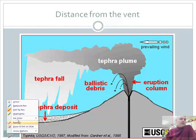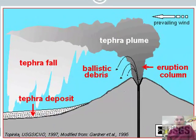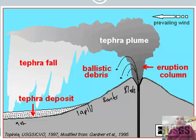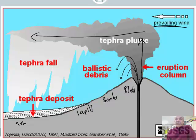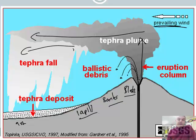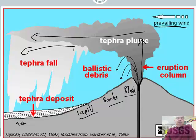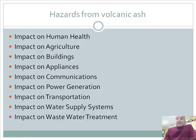Now let's talk about distance from the vent. Blocks land closest, then bombs, then lapilli, and lastly ash travels the furthest. How far they travel depends on a number of things: how strong the wind is on the day of the eruption, and how much material comes out of the volcano. With a lot of material and strong wind, ash can travel hundreds or even thousands of miles. The bigger and heavier the material, the shorter the distance it travels.